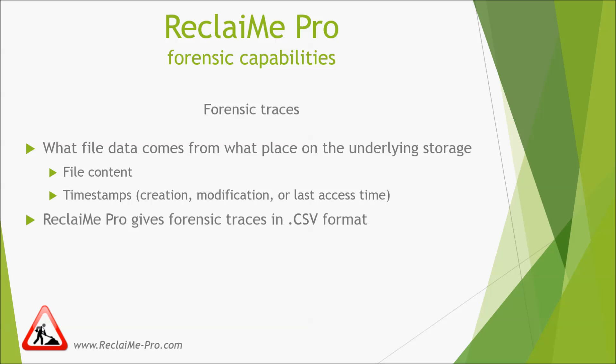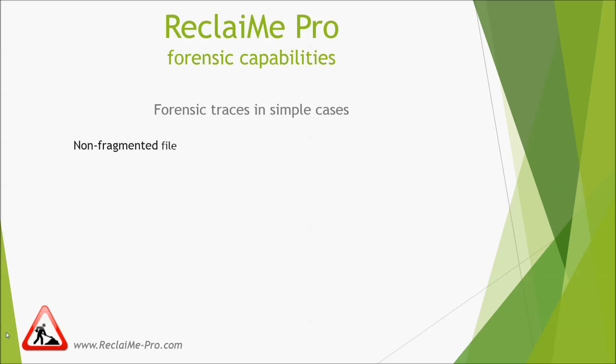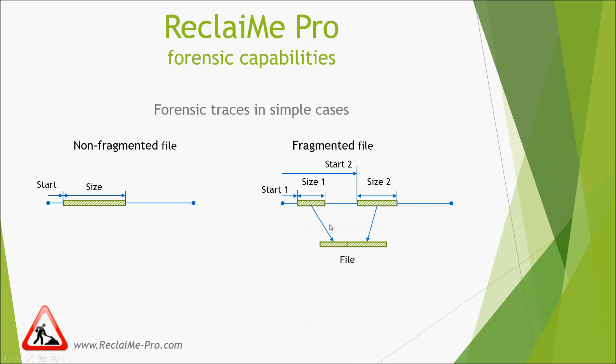Understanding the traces is an easy task only for older file systems. Simple cases include HFS+, FAT, exFAT, and the results of file carving. For these file systems, the location of a non-fragmented file can be described simply by the location of the beginning of the file on a disk and the length of the file. A fragmented file is described by several parts which, when joined together, provide the exact content of a file.